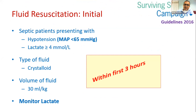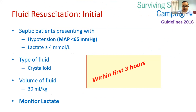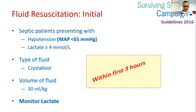The first important point is fluid resuscitation. In any septic patient, check blood pressure. If mean arterial pressure is less than 65, think about resuscitating with fluid first. Lactate is a marker of global hypoperfusion. If reported in mmol/L, it is high if greater than 4. If in mg/dL, around 35 to 40 mg/dL is really high — an indicator of global hypoperfusion.